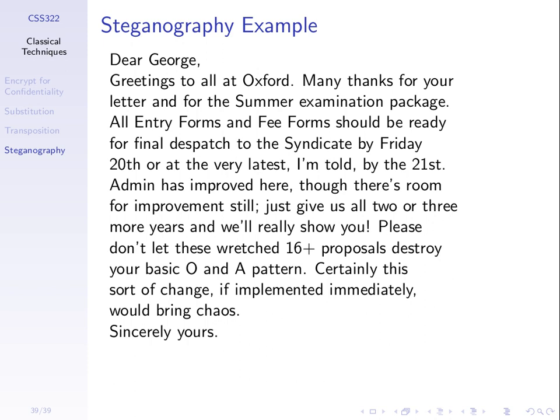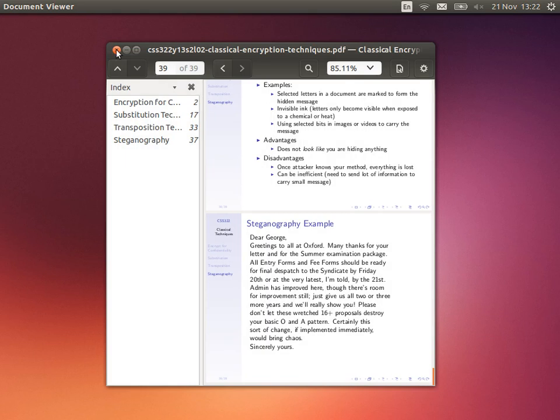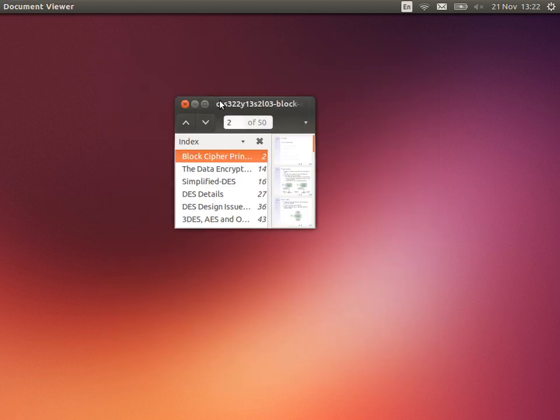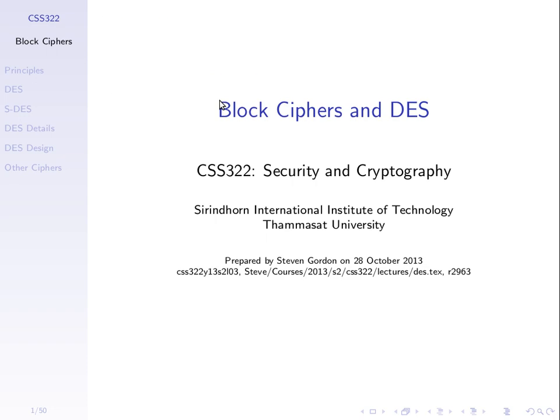Steganography, we'll not cover any more in this course. What's the best cipher we've got so far? Which cipher is the most secure? I've gone through Caesar, Monoalphabetic, Playfair, Vigenère, One Time Pad, Rail fence, Rows-Columns. The One Time Pad is the best — best in terms of security, it's the most secure cipher we know of.